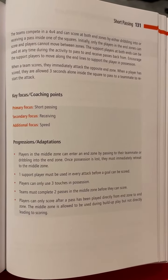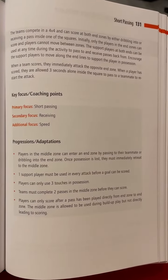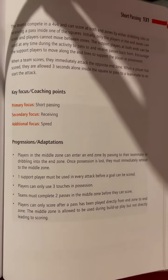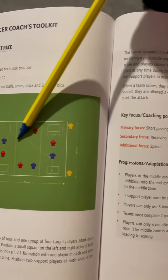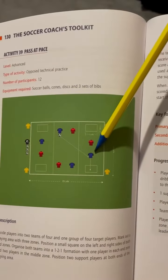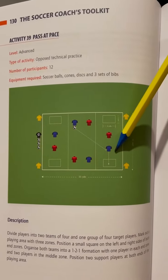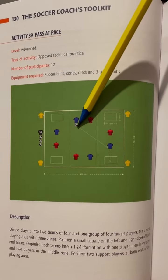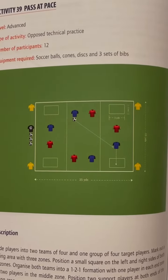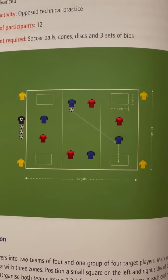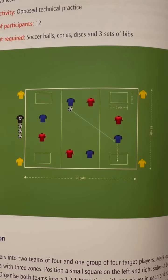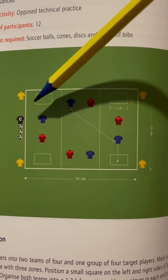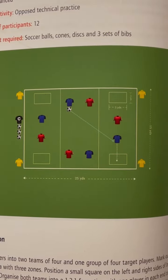A couple of good adaptations would be to allow some movement between zones. For example, the middle player over here, if he passes in to this player here, they can join in to support the attack but must retreat to their original zone once possession is lost. If you want to focus on a more direct type of pass, you can condition play so that a point can only be scored with a pass from an end zone to an end zone.